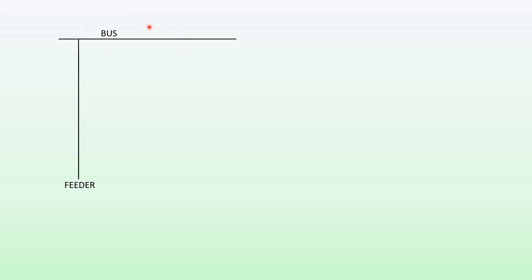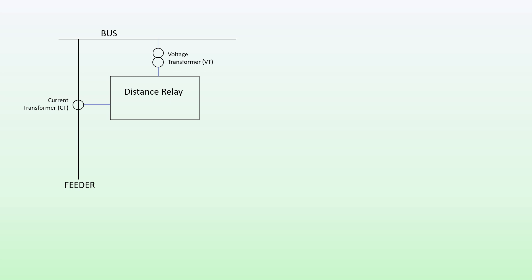To start off with, let's have a bus and a feeder. To that we add our distance relay. We have a current transformer, also known as a CT, and we have a VT or voltage transformer connected to the relay as well. The VT is also known as a potential transformer or PT.